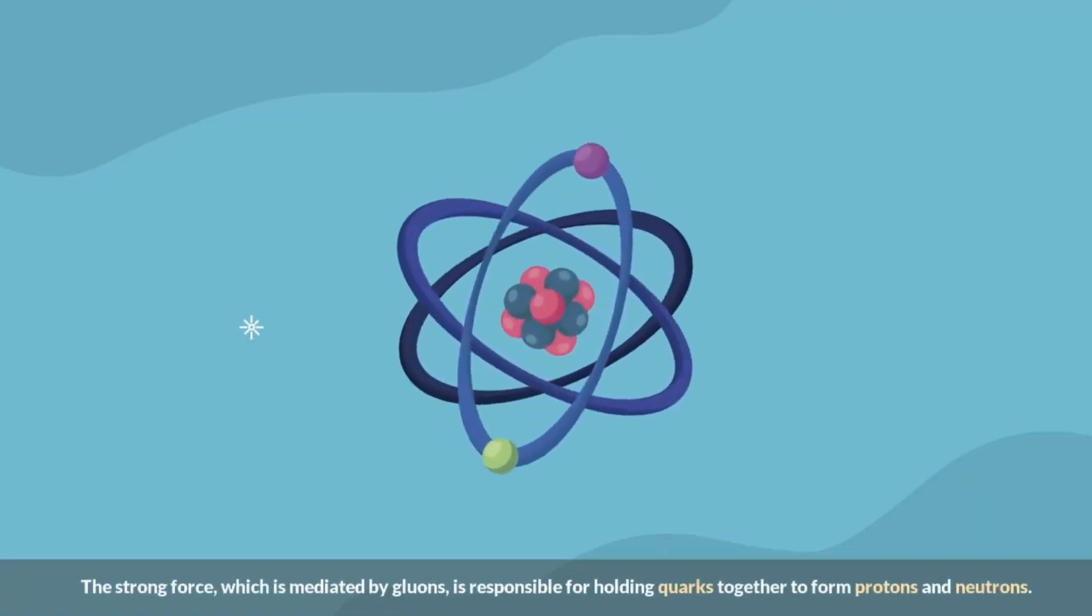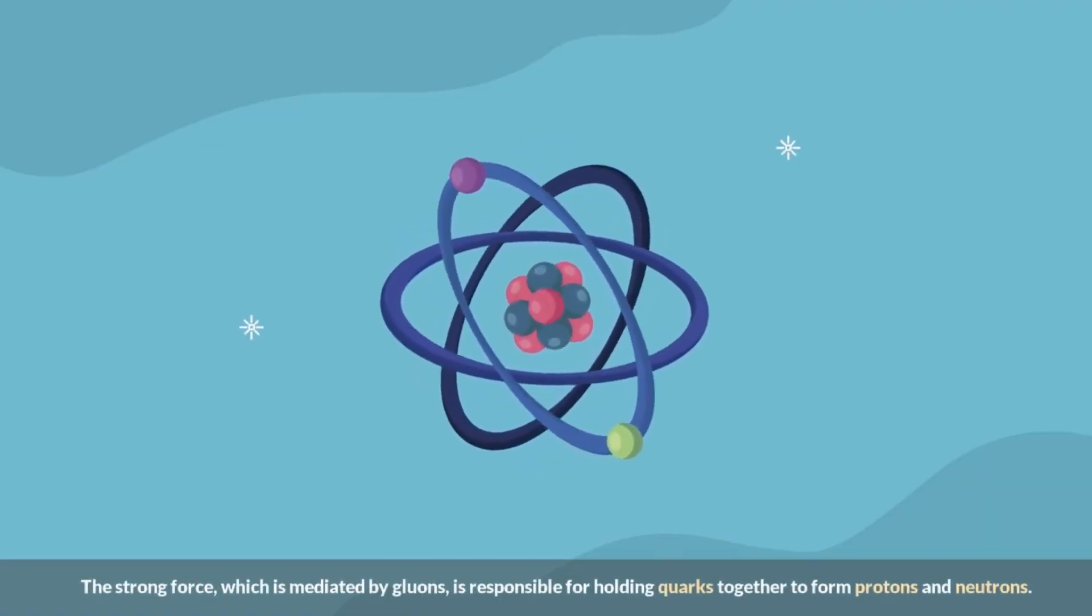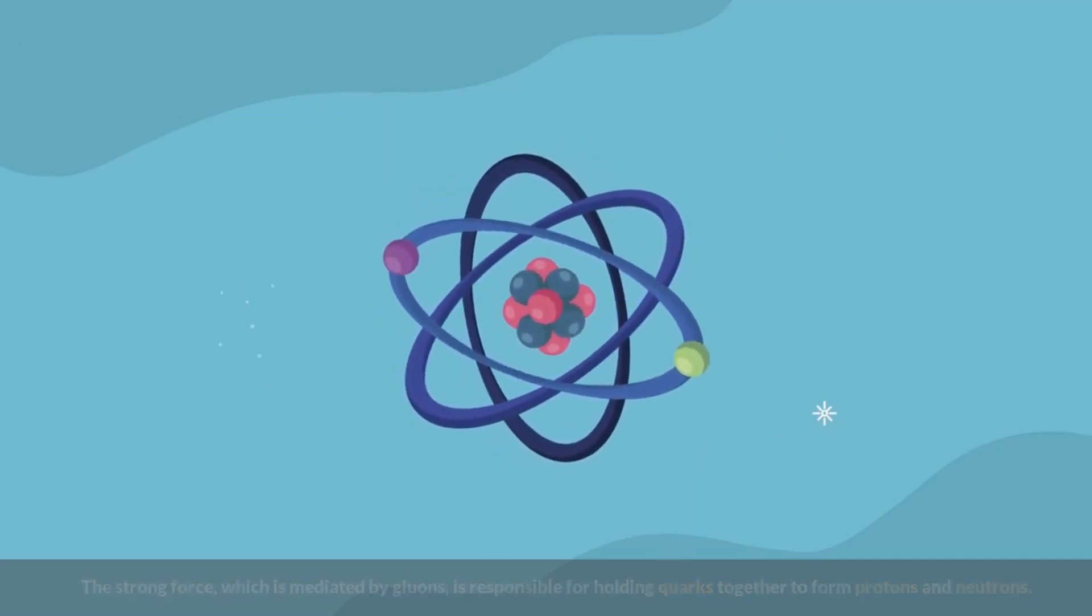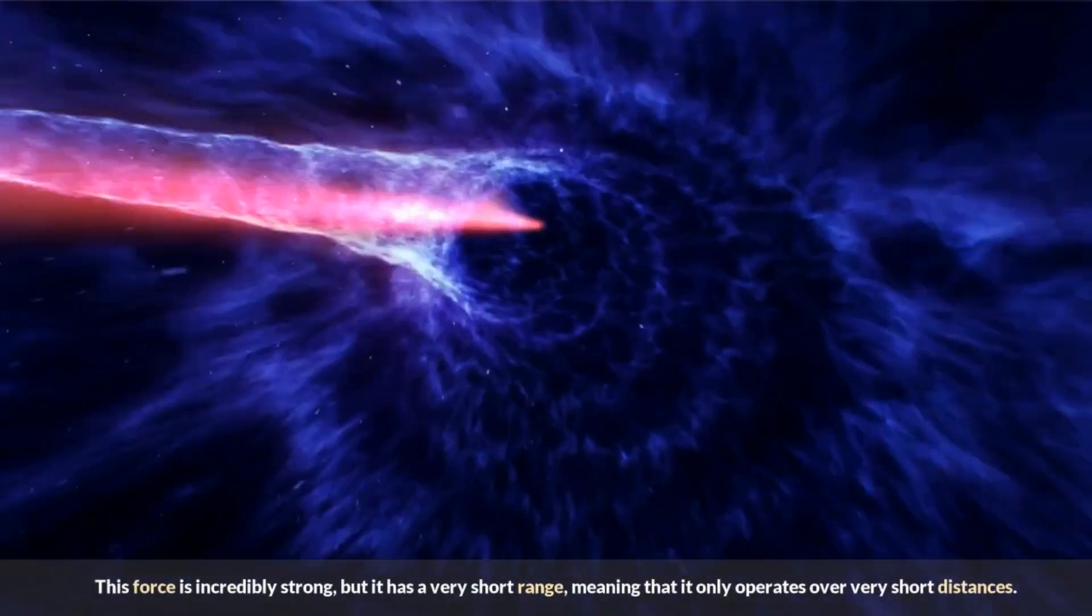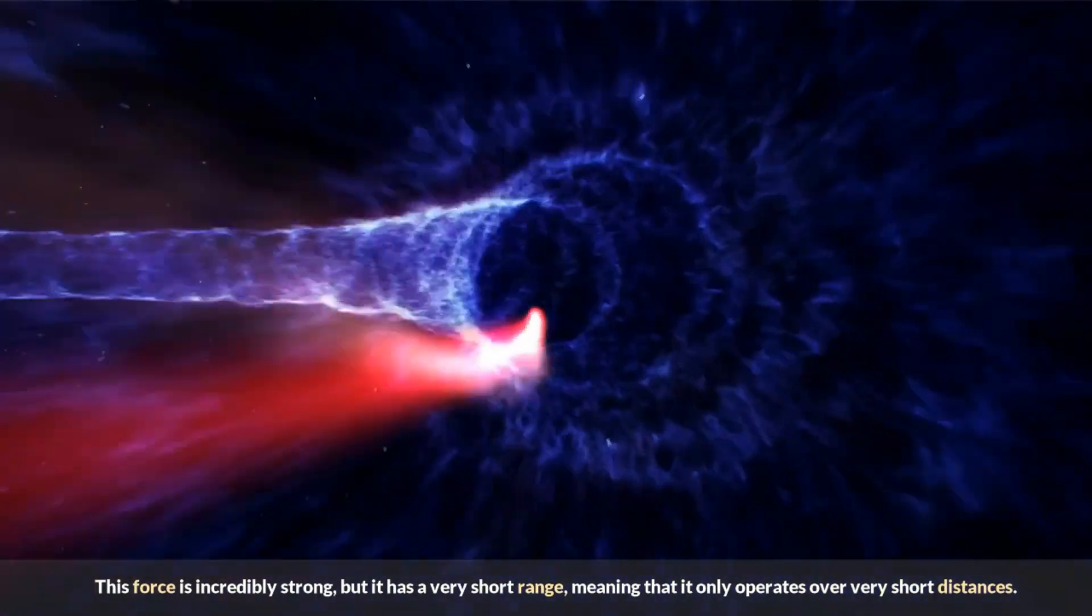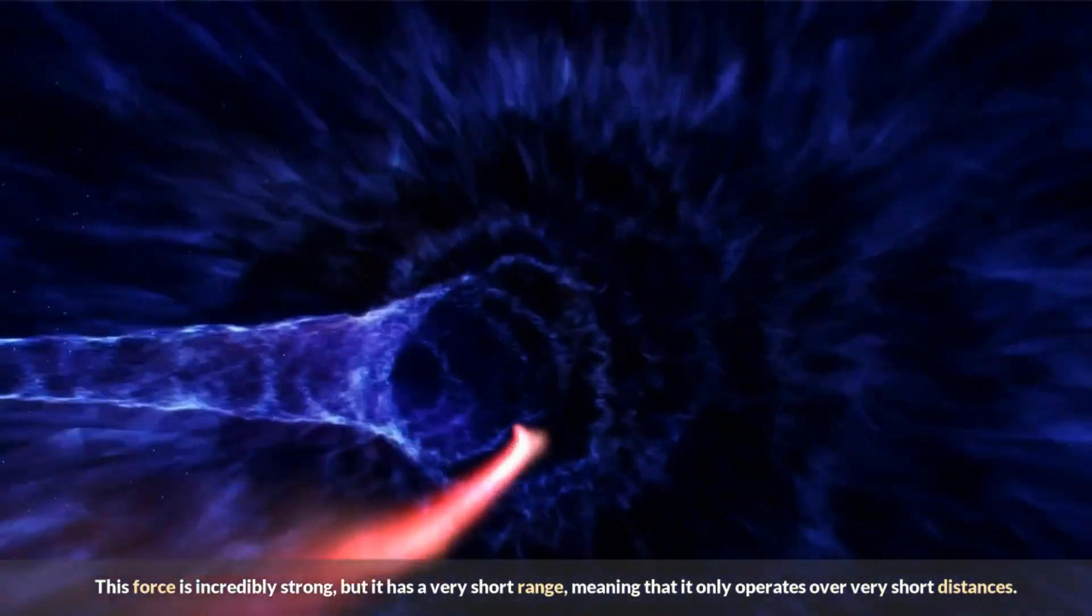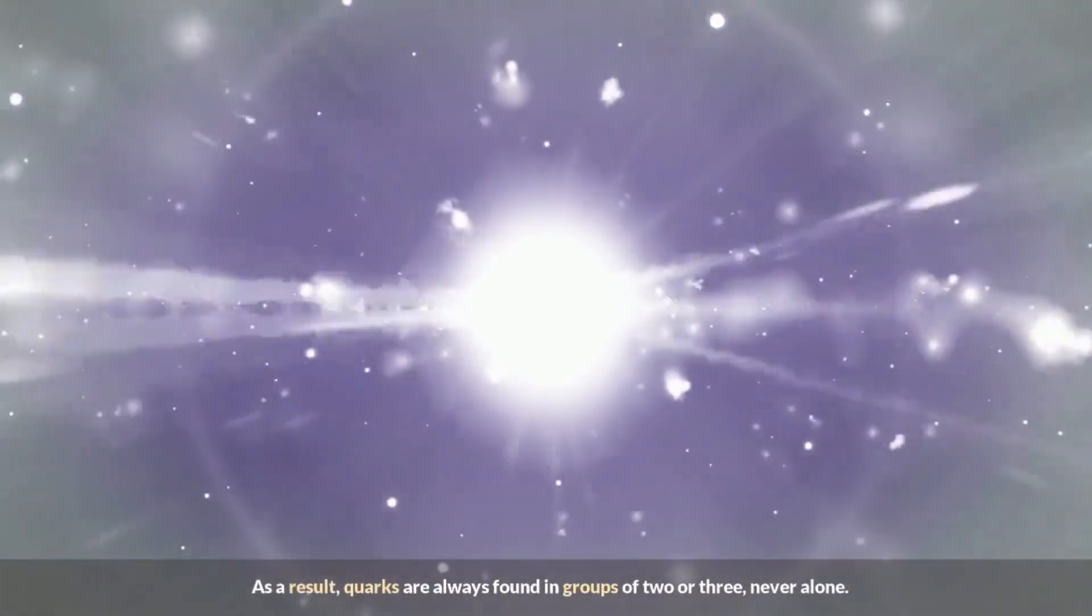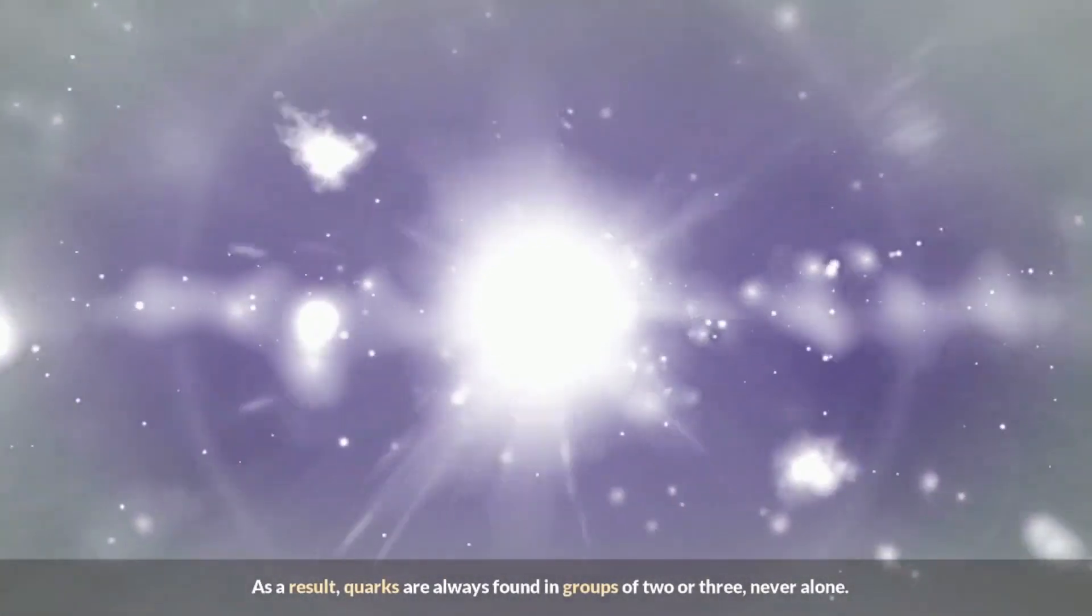The strong force, which is mediated by gluons, is responsible for holding quarks together to form protons and neutrons. This force is incredibly strong, but it has a very short range, meaning that it only operates over very short distances. As a result, quarks are always found in groups of two or three, never alone.